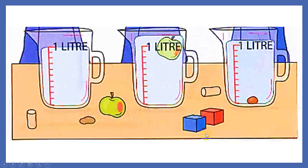Now let's see this example. This jug has a capacity of 1 liter. The volume of water is also 1 liter. I have some objects in front of me that I will be putting in the water. What has happened when I put the apple in the jug? Yes, look at the level of the water.